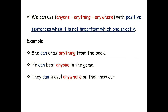We also use anyone, anything, anywhere with positive sentences when it is not important which one exactly. Example: She can draw anything from the book. He can beat anyone in the game. They can travel anywhere in their new car.